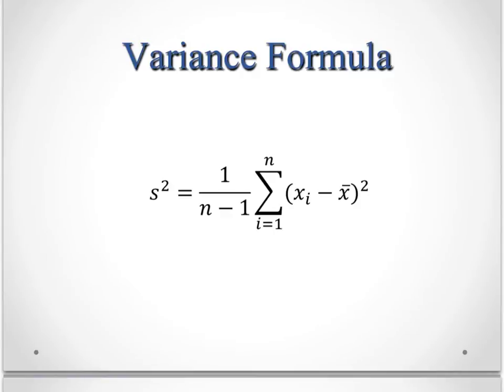Now here is the formula for what we call variance. Your calculator will do this. It's good to do one or two by hand, get an understanding for what you're doing. But let me kind of unpack this formula for you. First of all, n is the number of data points you have, the number of observations.